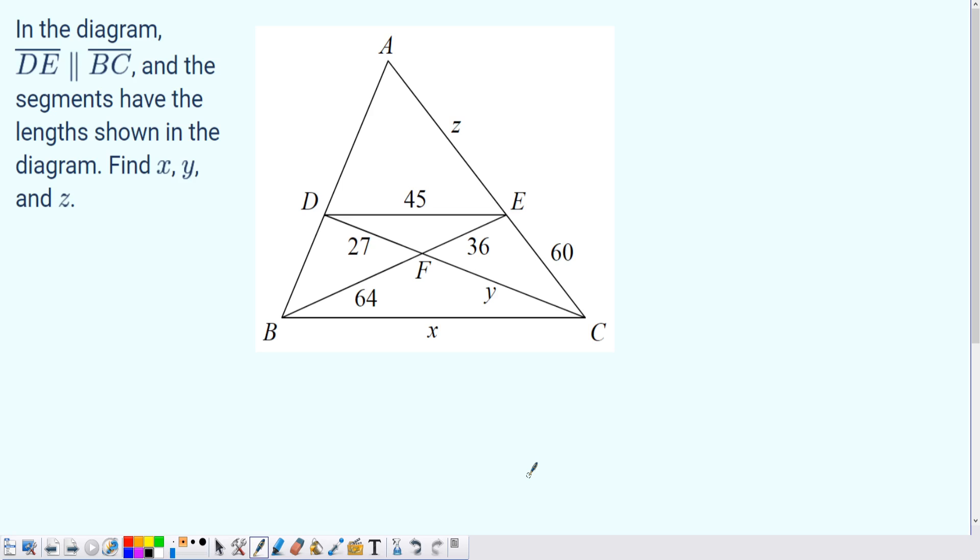So let's tackle this problem, which seems to be more complex than the ones we've looked at in the past. It says in the diagram that DE is parallel to BC, and the segments have the lengths shown in the diagram. Find x, y, and z.